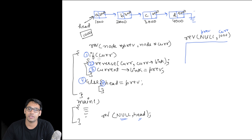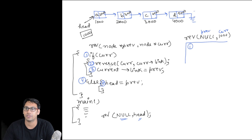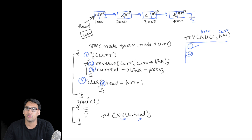In line 1, if current — and current is storing 1000, which is not null — therefore we are going to execute the code present in this if statement. We will come to line 2, and in line 2 we are doing a recursive call. Unless we finish this recursive call, we cannot execute line 3.